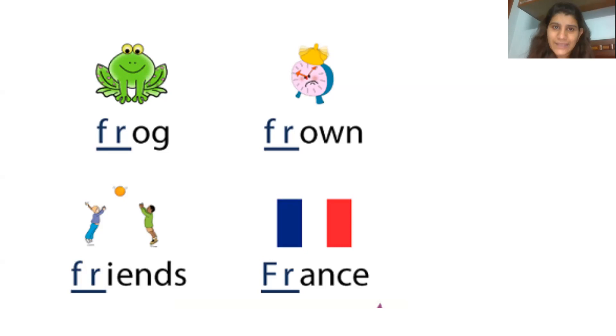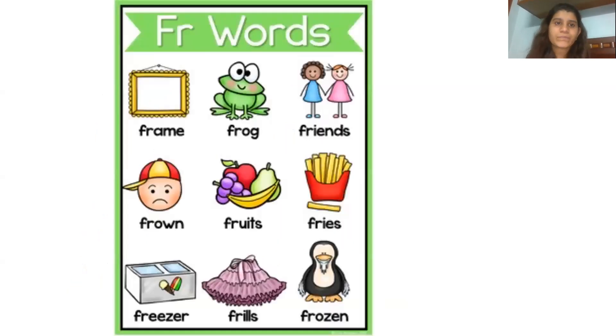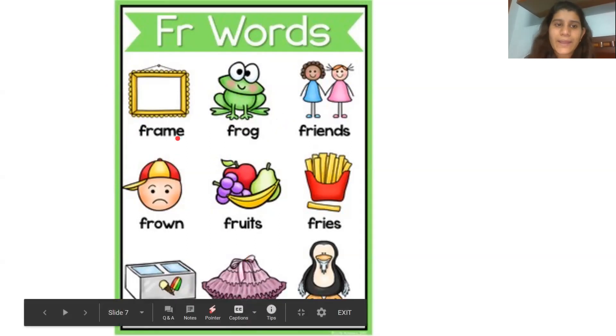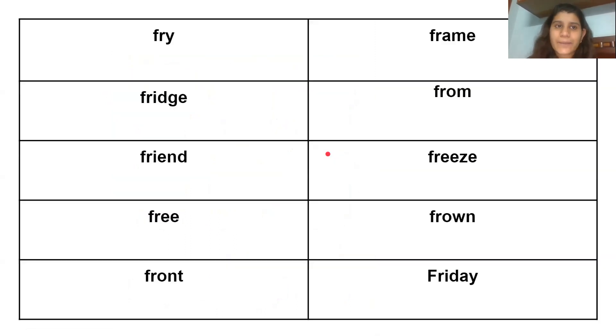So this is the list of words that you can see, understand their meaning and practice the fr sound. You can pause the screen and practice the words. Frame means where we put a photo. Friends means dose. Frill means thirds of frill. Now task number one, what you have to do is you have to send me an audio of reading all of these words.